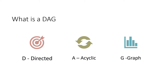DAG stands for directed acyclic graph. At a very basic level, a graph is nothing but a collection of vertices and edges. A directed graph means it has a direction — every edge has a direction, going from point A to point B. Acyclic means there are no cycles; there is only one path to reach from one vertex to another.